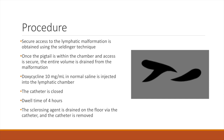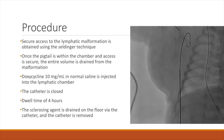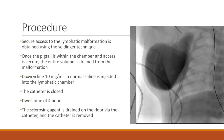For our procedure, we will discuss sclerotherapy with doxycycline. To begin, secure access is obtained using the Seldinger technique: an access needle is advanced into the malformation under ultrasound guidance. Before removing any fluid, a wire is advanced into the malformation, and then under fluoroscopy the needle is exchanged over the wire for a pigtail catheter placed within the chamber.